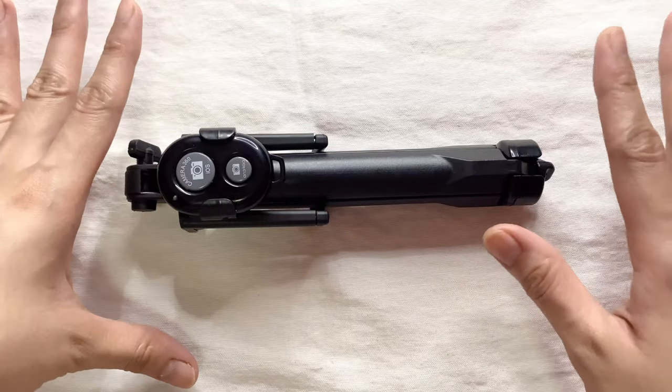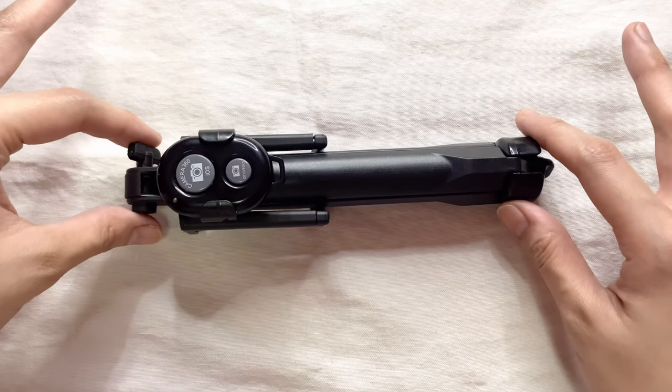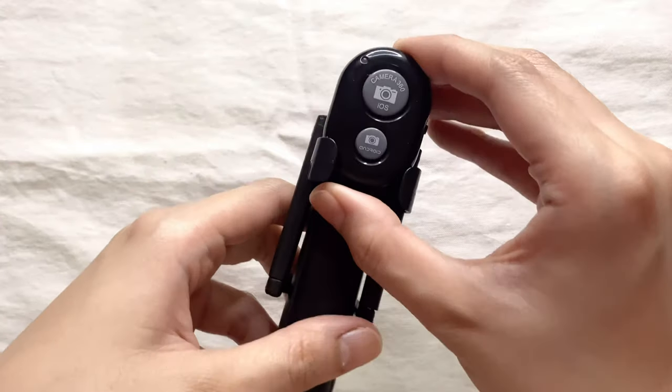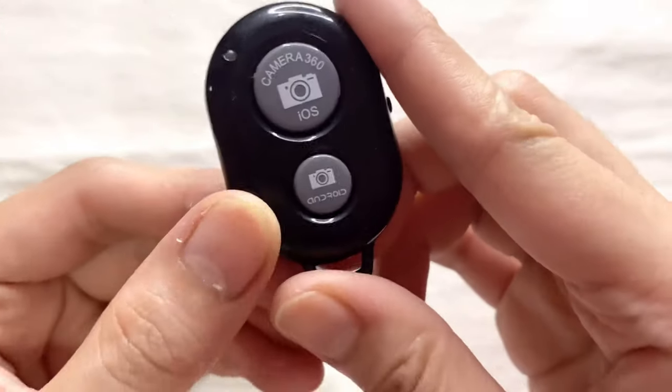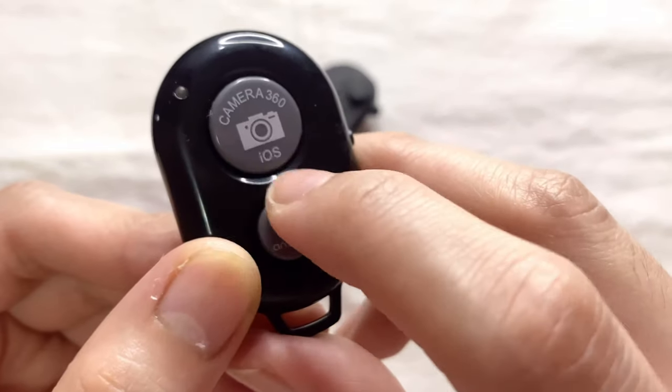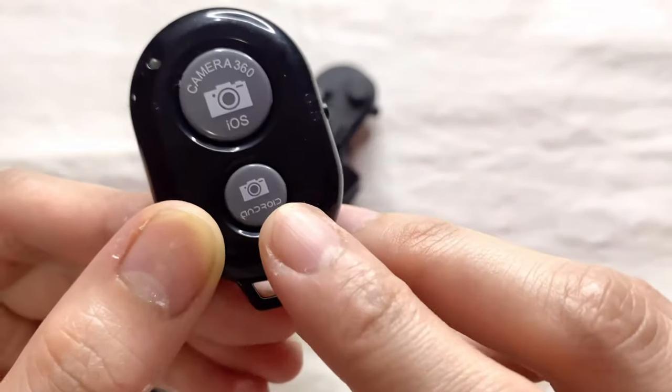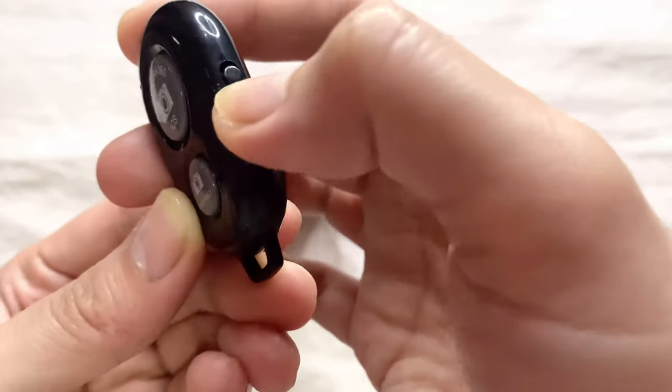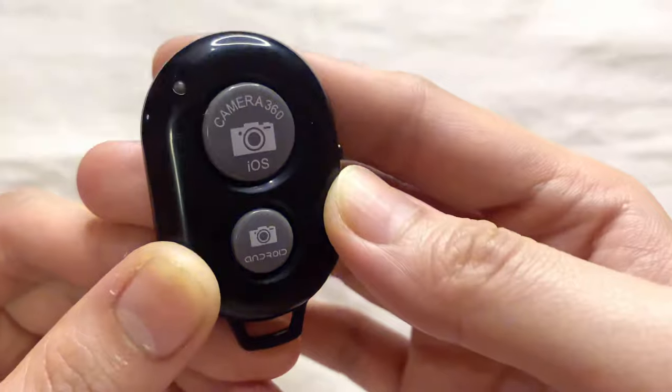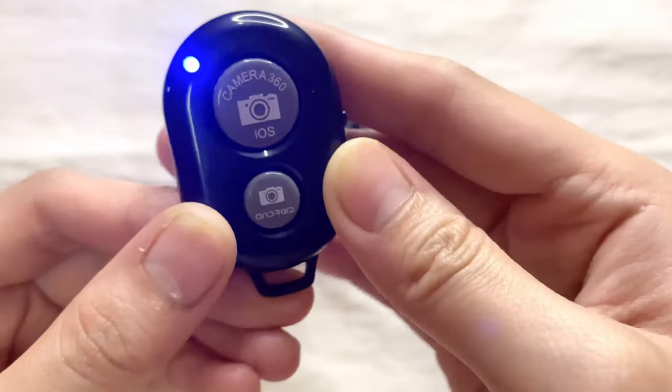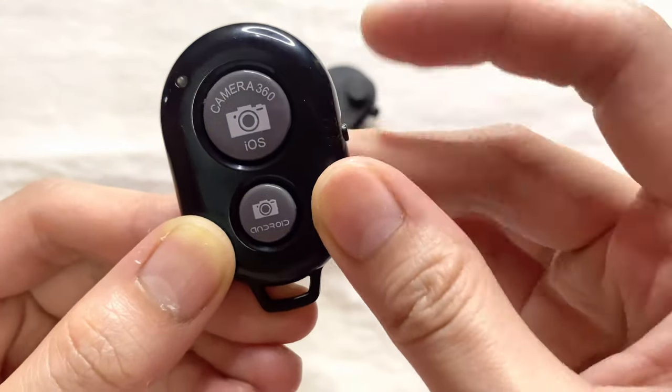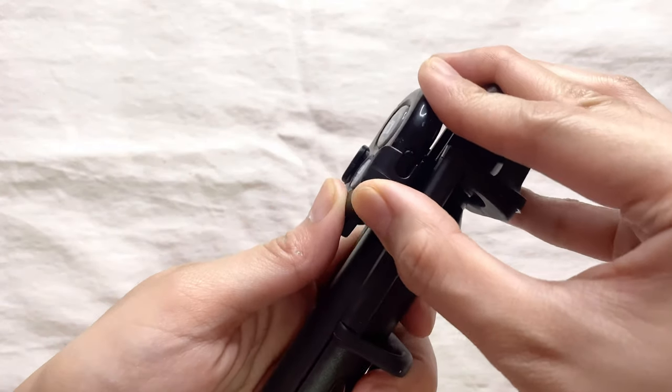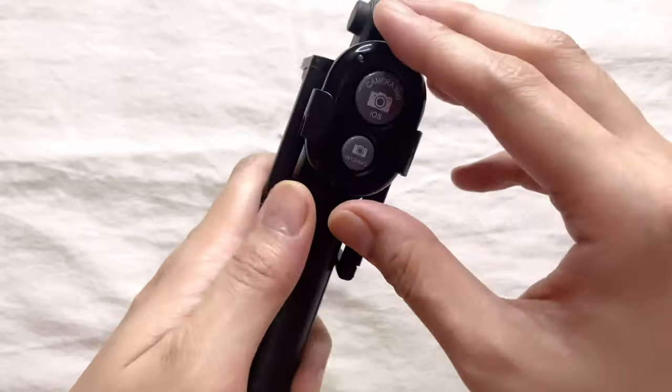I will show you the features of this 3-in-1 wireless bluetooth selfie stick. First, there is a remote control for iOS and Android, which means it is compatible for both phones. To pair, just slide this button up and you can see that it will blink. That means it is now ready to pair. When I finish it, just go back to the holder of the remote.